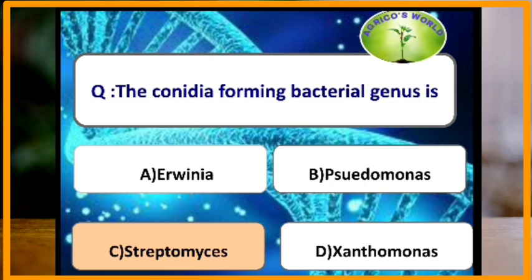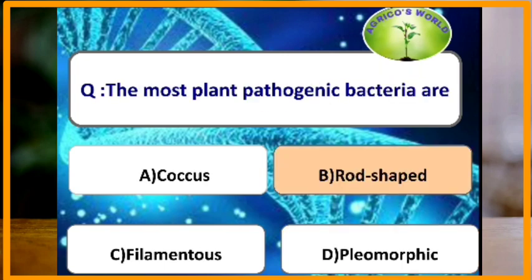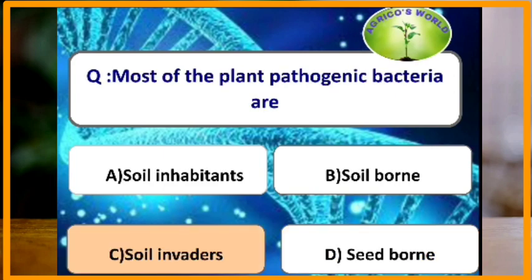The conidia-forming bacterial genus is Streptomyces — the filamentous bacteria Streptomyces forms conidia by formation of a transverse septum at the apex of the filament. The filamentous branching bacterial genus is also Streptomyces. Most plant pathogenic bacteria are rod-shaped. A single bacterium appears as usually hyaline. Most plant pathogenic fungi and bacteria are soil invaders.